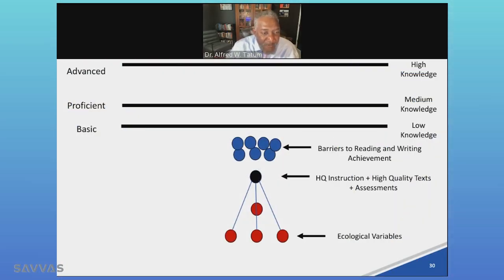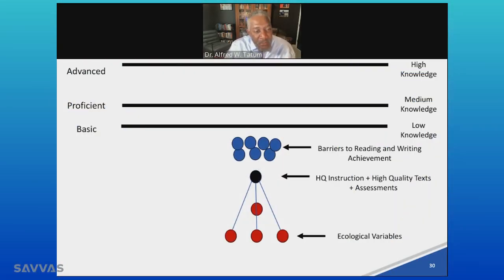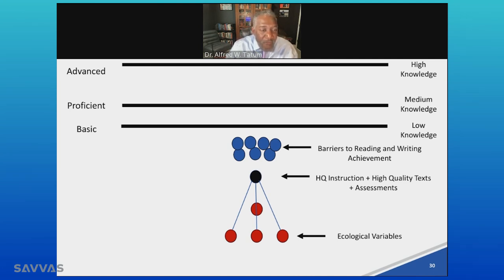This is a simulated marble game. You have these ecological variables — the red balls — that's when we talk about economics, poverty, culture, and language. This black marble in the middle represents instruction and text, and then we have barriers to reading achievement.